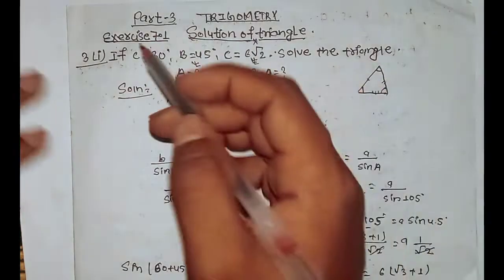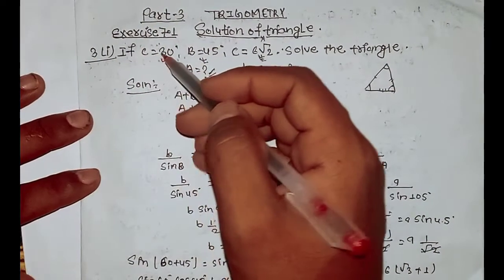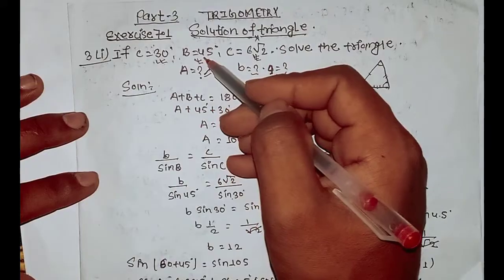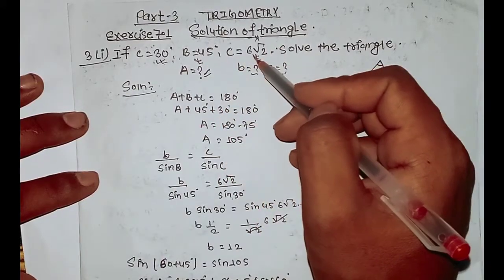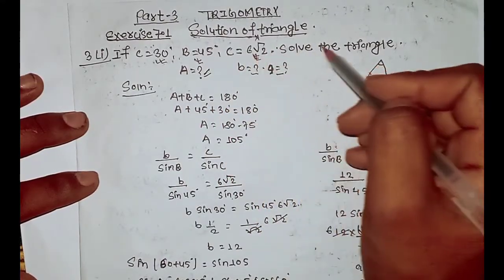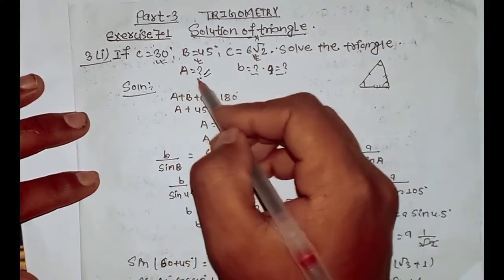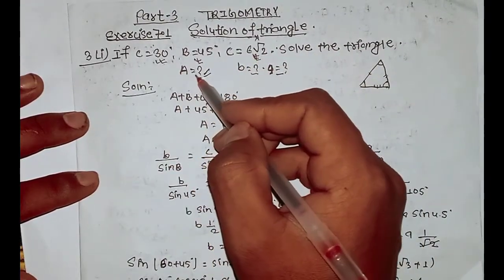First question: if C equals 30 degrees, B equals 45 degrees, and c equals b root over 2 — solve the triangle, meaning find all remaining sides and angles.